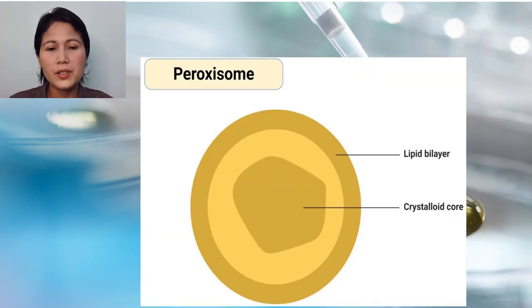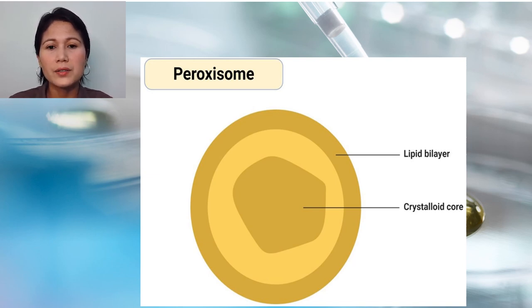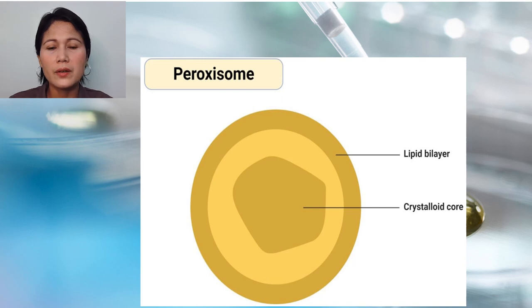Another cell structure is the peroxisome. Peroxisomes are oxidative membrane-bound organelles found in the cytoplasm of all eukaryotes. The name is credited to their hydrogen peroxide generating and removing activities. Peroxisomes are involved in the production and elimination of hydrogen peroxide during biochemical processes.